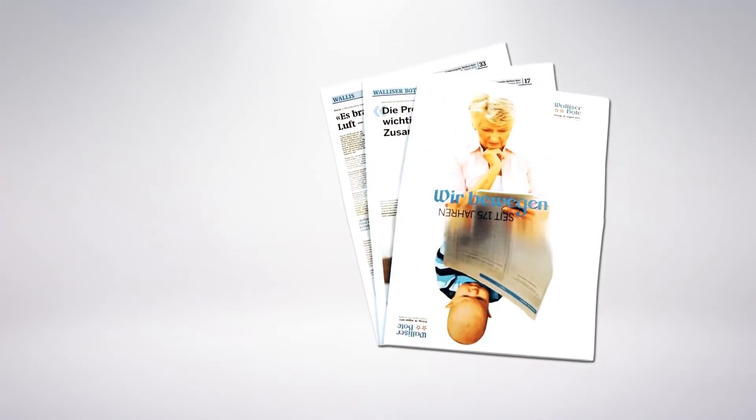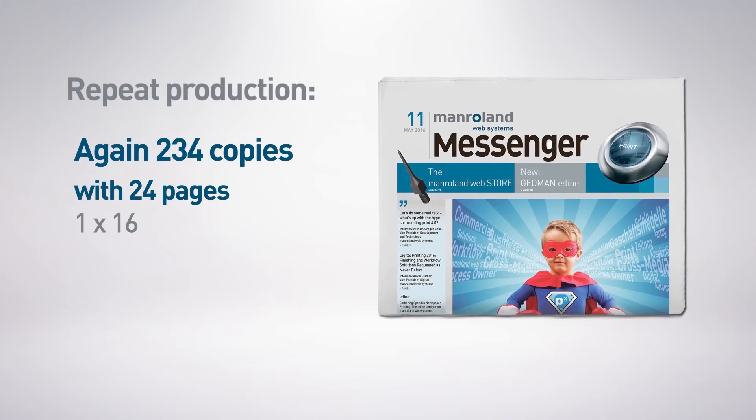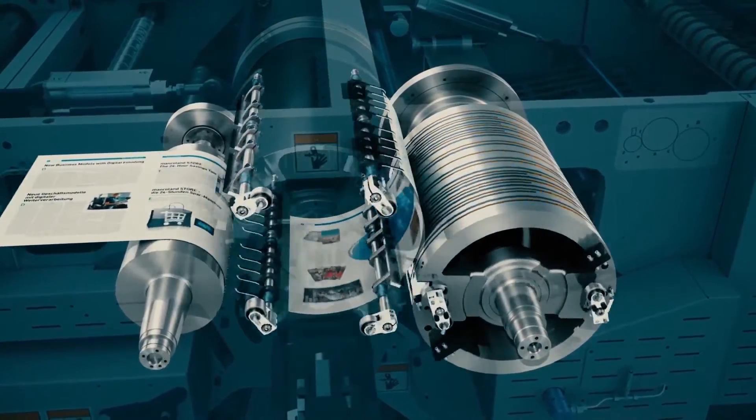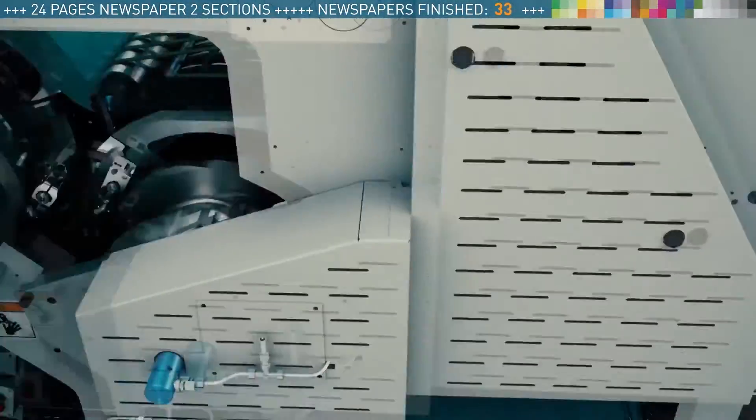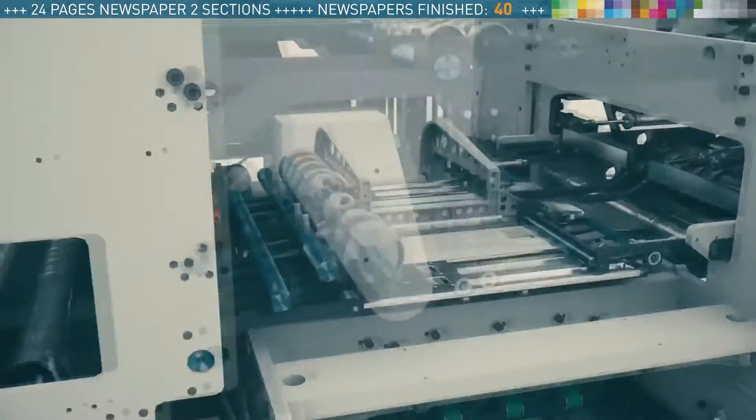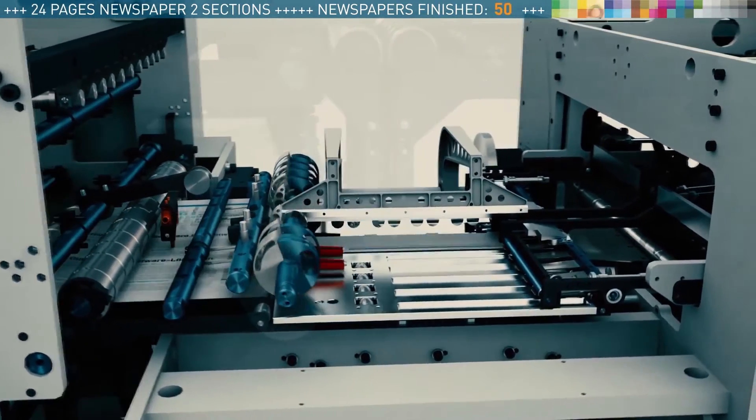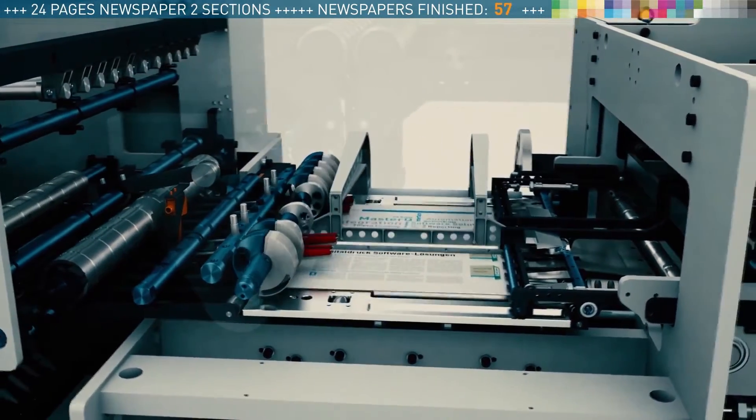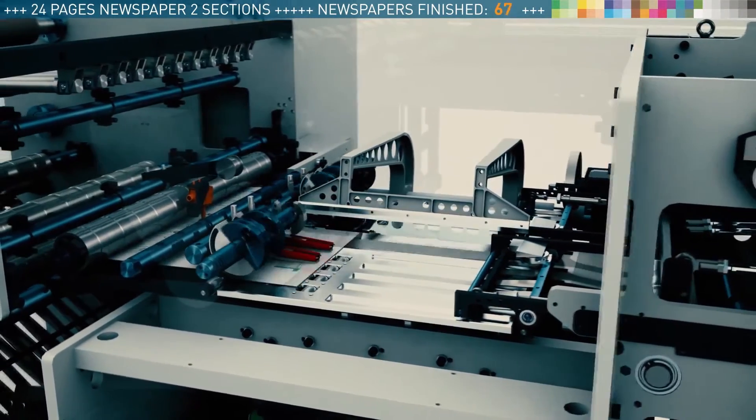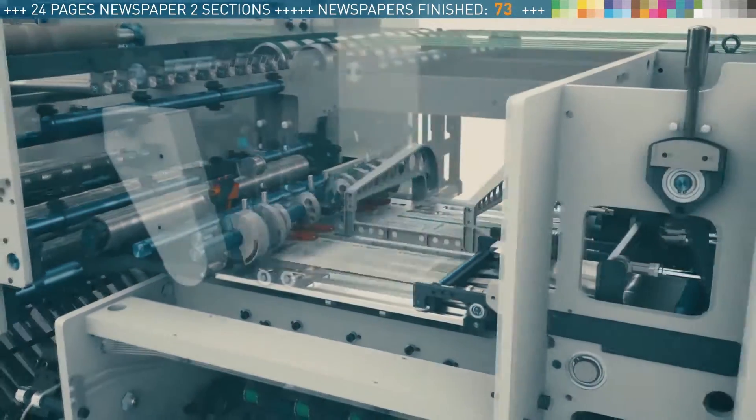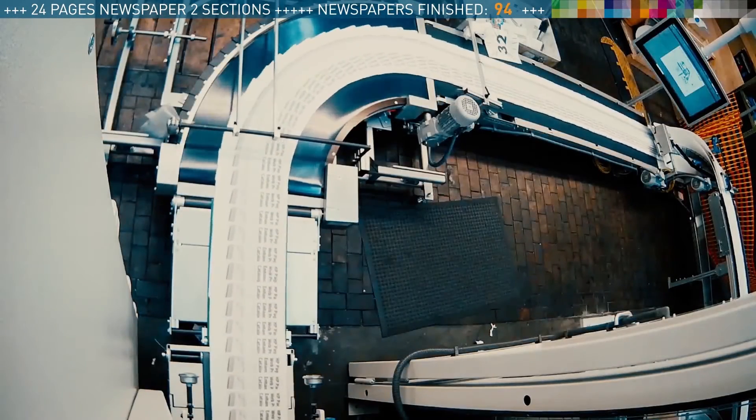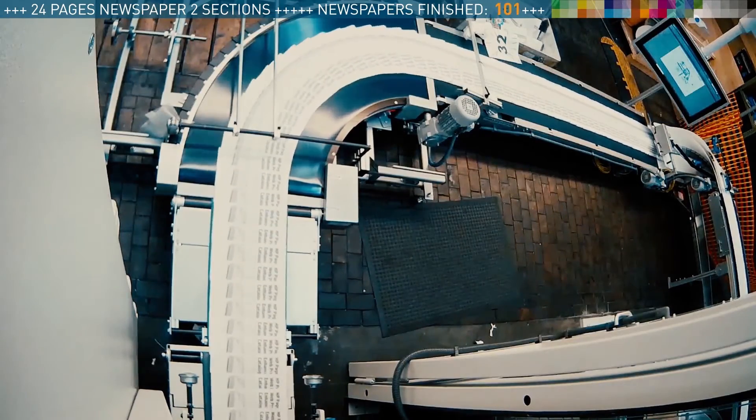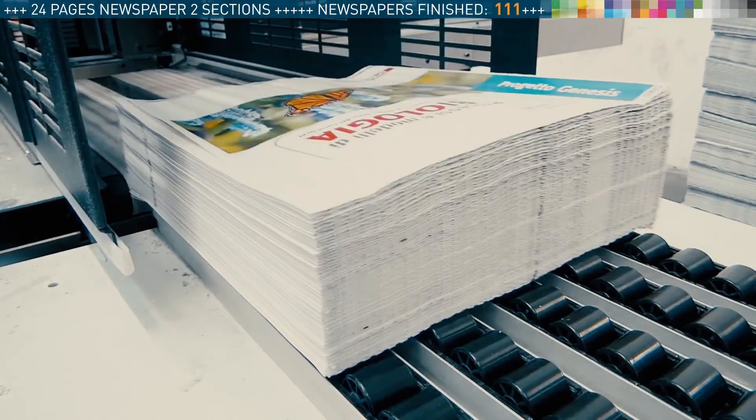The first job has to be produced again. We start to build sections. The sections are collected at the cylinder. The sections are collected at the quarter fold. The newspaper is stacked at the lift collator.